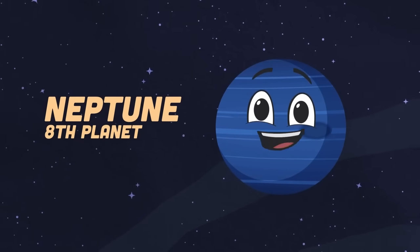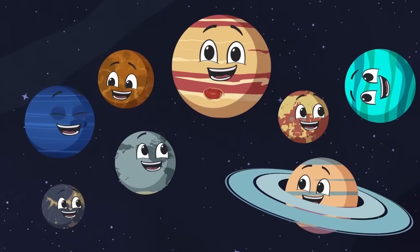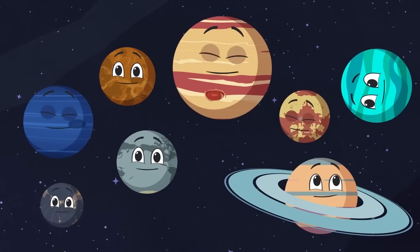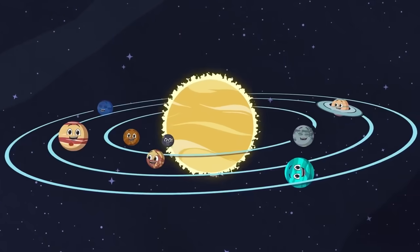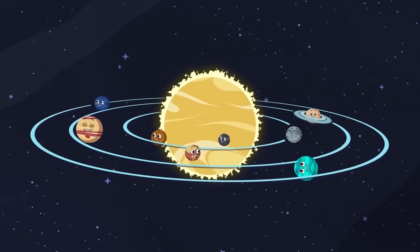I'm the eighth planet from the sun, my name is Neptune. I orbit the sun in 165 years and I have 14 moons. We're the eight planets of the solar system, roughly in the same plane as we orbit the sun.